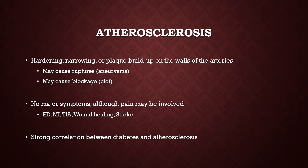One of two things is going to happen with atherosclerosis. One: there's either going to be a rupture because the pressure gets so high that it develops a ballooning or weakening of the wall, called an aneurysm, which can rupture. Or it can cause a complete blockage — meaning no oxygen or nutrients are getting to that area.